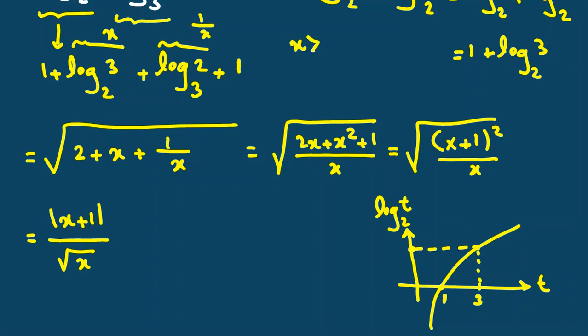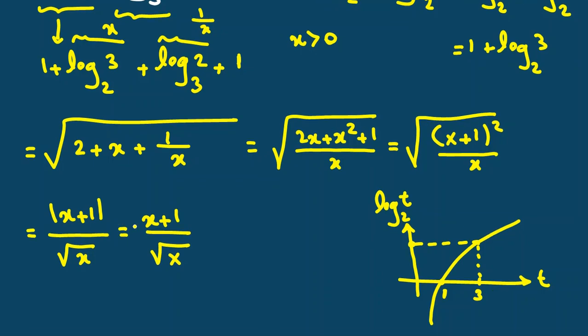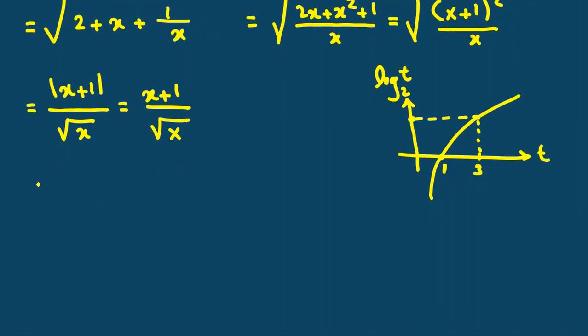So, we conclude X is positive. And because X is positive, the numerator will be X plus 1 over root X. You can say it is X over root X plus 1 over root X.